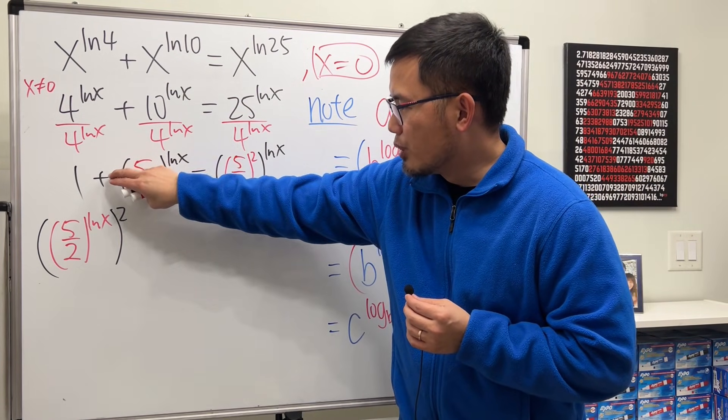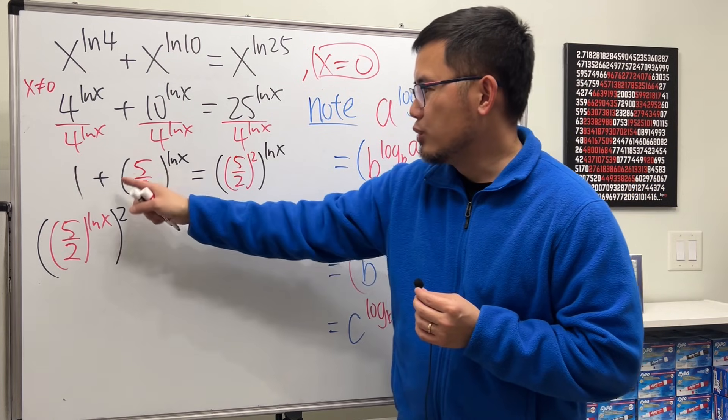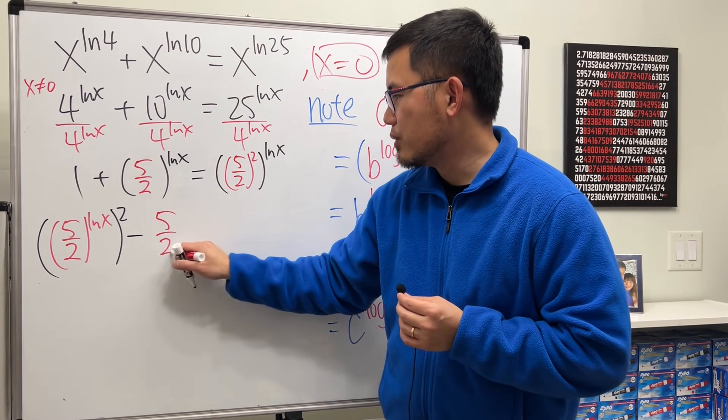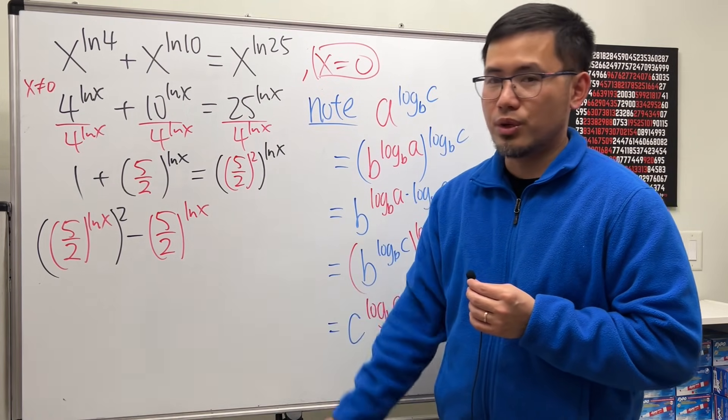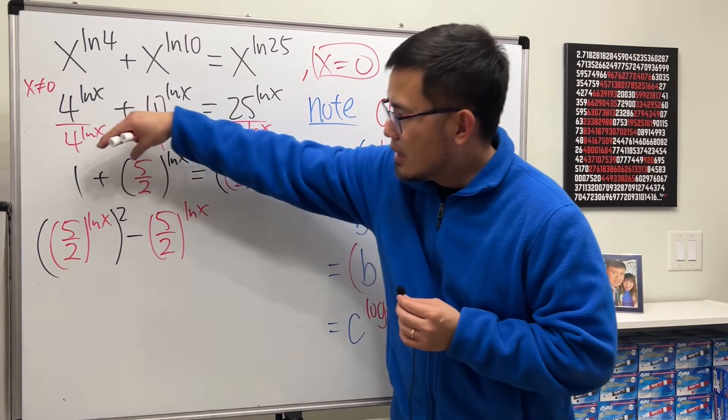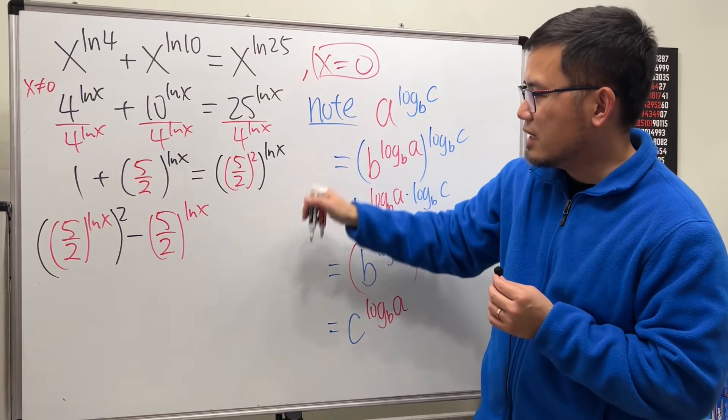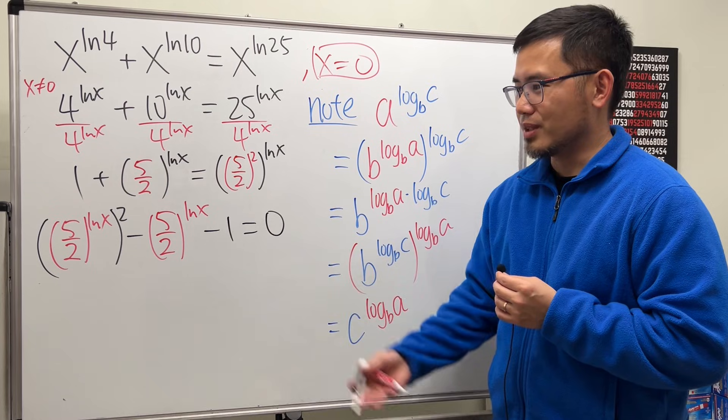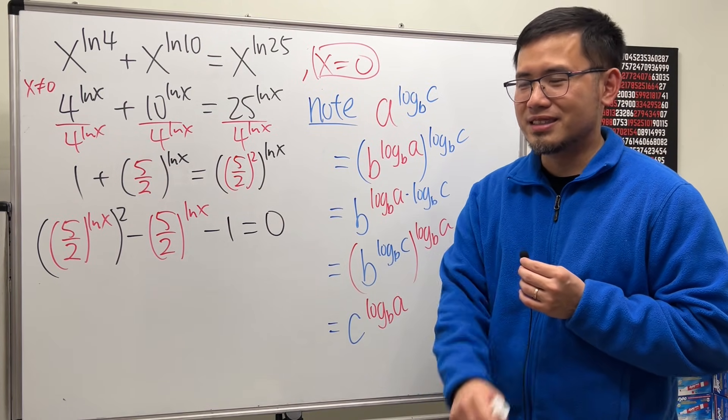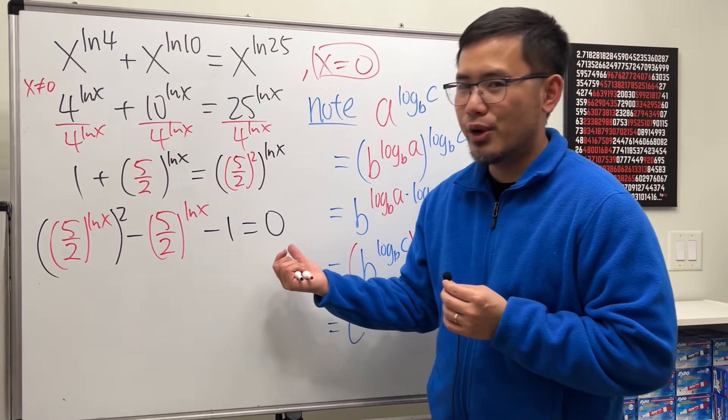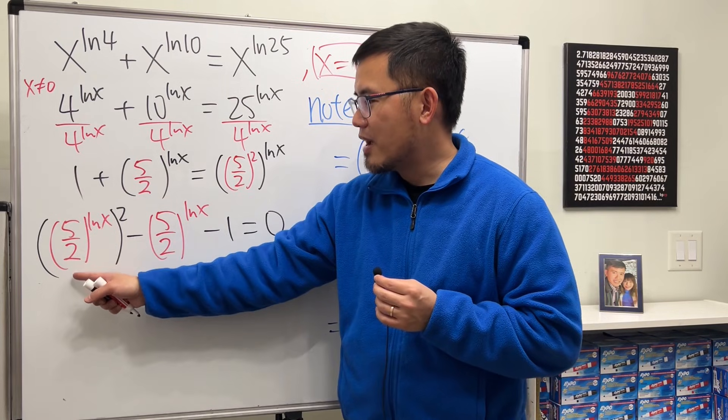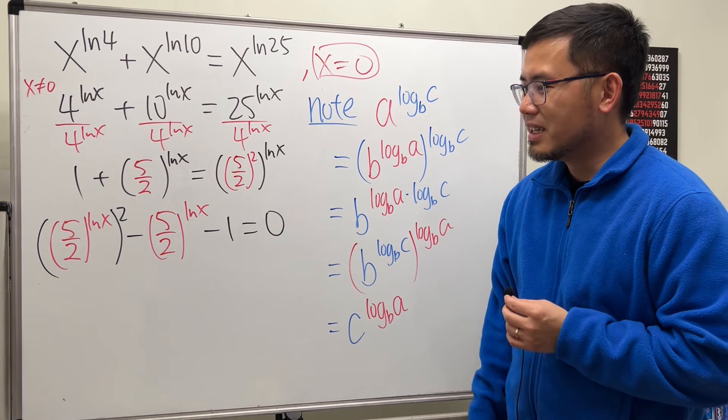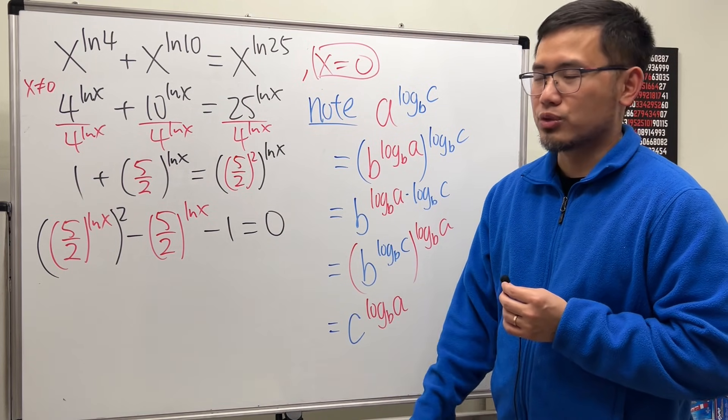And then next, I'm going to bring this to this side, so it will be a minus, and then we have 5 over 2, and that's to the Lnx power as well. And then let's also bring the 1 to this side, and that will be minus 1, and that's equal to 0. So now what do we have? Yes, we have a quadratic equation, but in terms of 5 over 2 raised to the Lnx power. It's really bizarre, but it works.